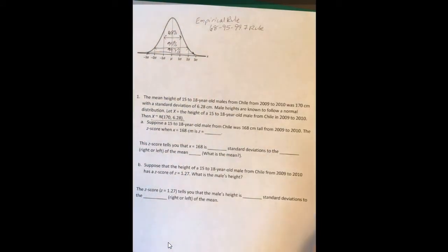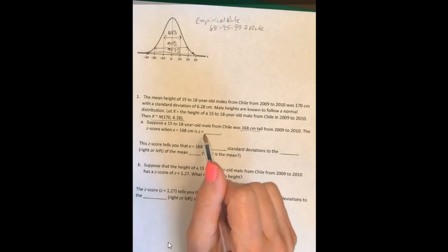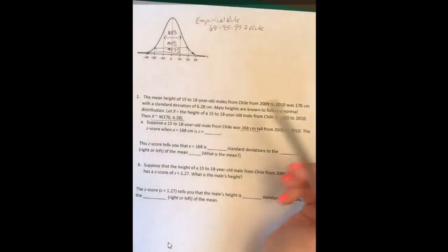It says, suppose a 15 to 18-year-old male from Chile was 168 centimeters tall from 2009 to 2010. The z-score when x equals 168 centimeters is what?